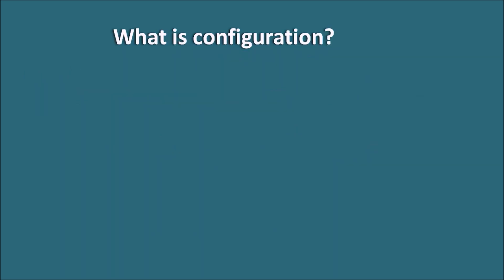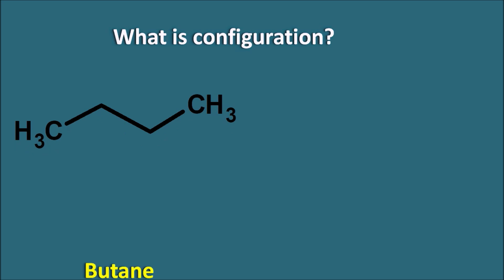What is actually configuration? Configuration is the arrangement of the groups within the space. For example, if you take a simple compound like this, this is an alkane with 4 carbons, so it is a butane.